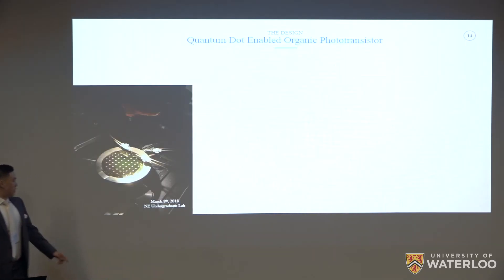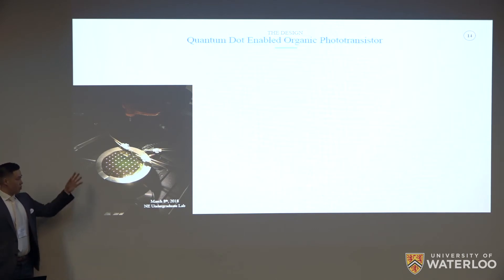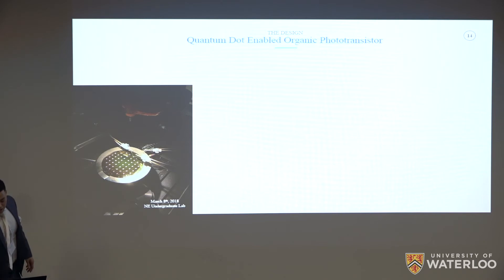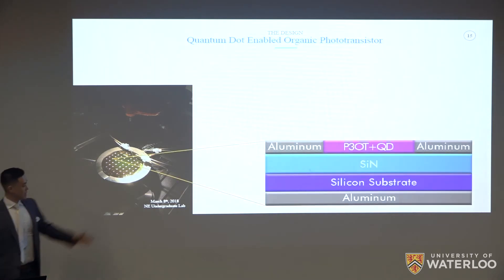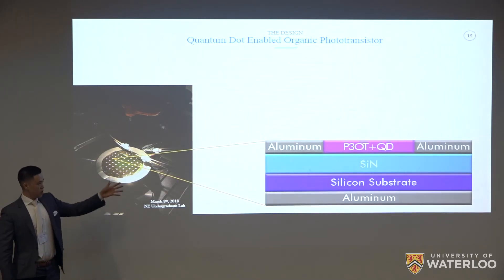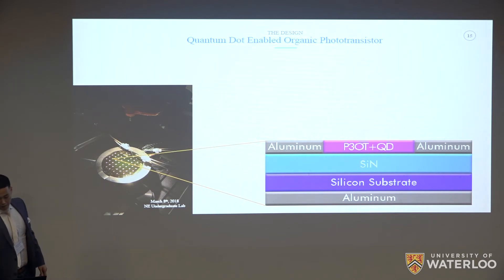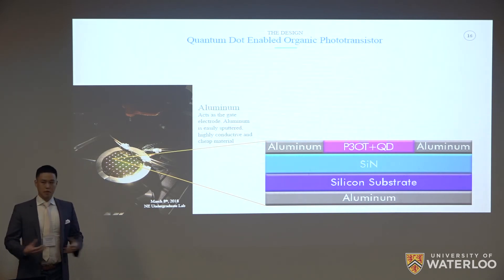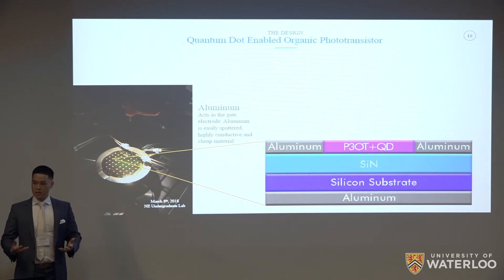Here is an image of our device — a wafer with 52 identical devices patterned on it. Zooming in, we can see the structure of one device from top to bottom. At the bottom layer we have an aluminum gate electrode. We use aluminum because it's easier to work with, easily sputtered, highly conductive, and relatively cheap. Beneath that is a silicon substrate.